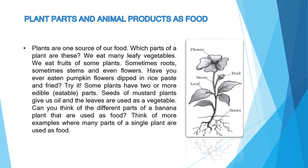Plants food के source हैं, लेकिन plants के किस part को हम food के रूप में use करते हैं? कुछ vegetables की leaves खाते हैं, कुछ के fruits, कुछ के roots, stems और flowers भी। कुछ plants ऐसे भी होते हैं जिनके दो या दो से ज्यादा parts use होते हैं। For example, mustard plant के seeds से oil मिलता है और उसकी leaves vegetable के रूप में use होती हैं।